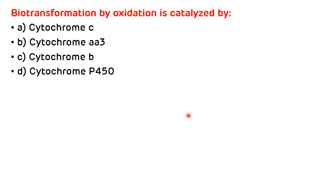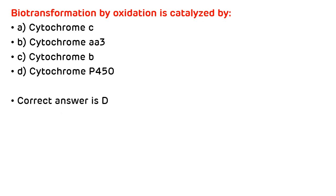Second question: biotransformation by oxidation is catalyzed by A) cytochrome C, B) cytochrome AA3, C) cytochrome B, or D) cytochrome P450. The oxidation, which is an important phase 1 reaction in detoxification, is catalyzed by cytochrome P450, the concentration of which is highest in the microsomes of the liver. The correct answer is D.